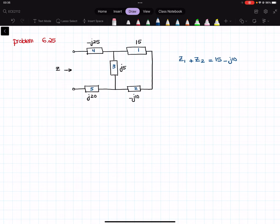So that would be 15 minus J10. Then this 15 minus J10 would be over here in parallel with Z3. So here I'm going to have, if I call this ZE1, Z equivalent 1, Z1 would be in parallel with Z3, and then we have the rest of the circuit.